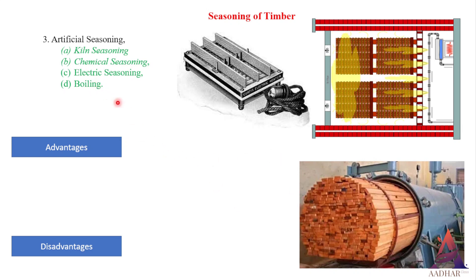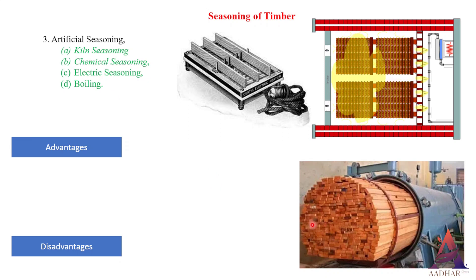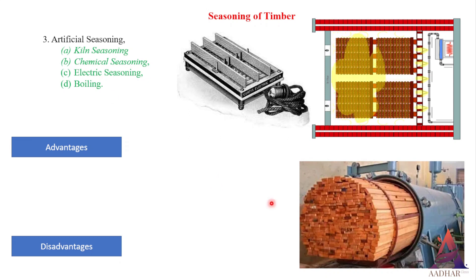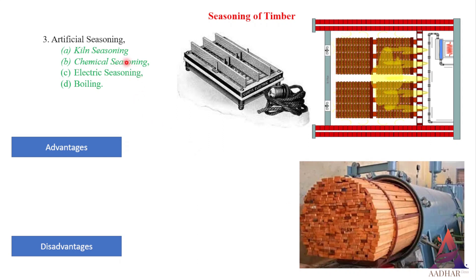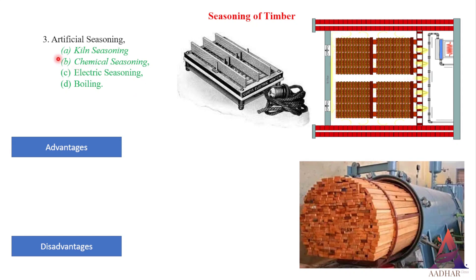Chemical seasoning. In the case of chemical seasoning, timber is stored in a suitable salt solution for some time. The salt solution used has the tendency to absorb water from the timber, so the moisture content is removed and then timber is allowed to dry.